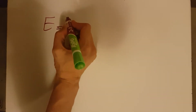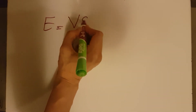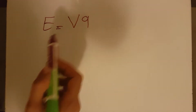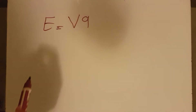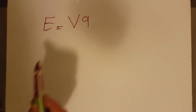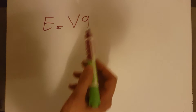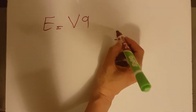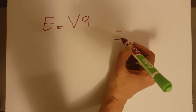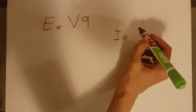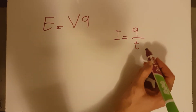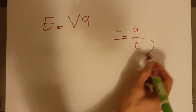Remember, energy E equals V times Q, because V is the energy spent for one coulomb of positive charge, and E is the energy spent for Q coulombs. We also remember the definition of I, which is Q over time.